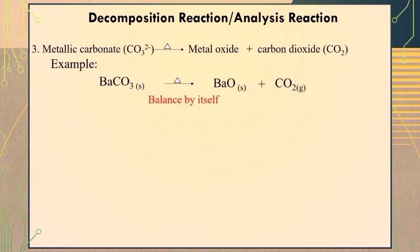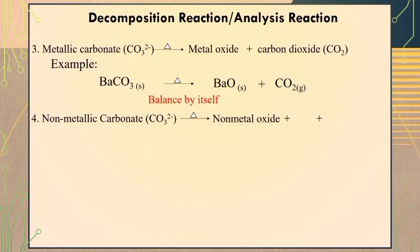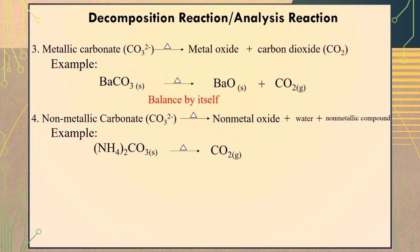The fourth type of decomposition reaction is the decomposition of non-metallic carbonate. When heat energy is applied to non-metallic carbonate, it will dissociate into non-metal oxide plus water plus non-metallic compound. For example, when heat energy is applied to ammonium carbonate, it will dissociate into carbon dioxide, which is the non-metallic oxide, plus water plus ammonia, which is the non-metallic compound. To balance the equation, we simply place a coefficient of 2 before the chemical formula of ammonia.